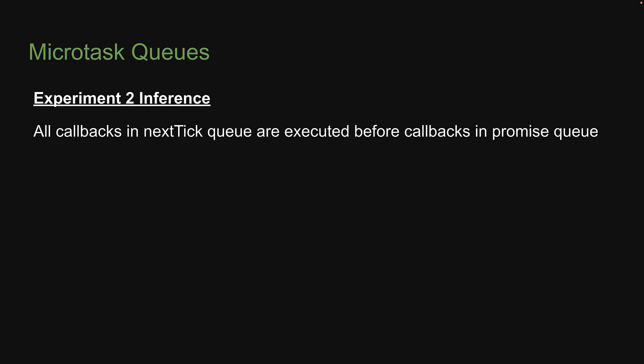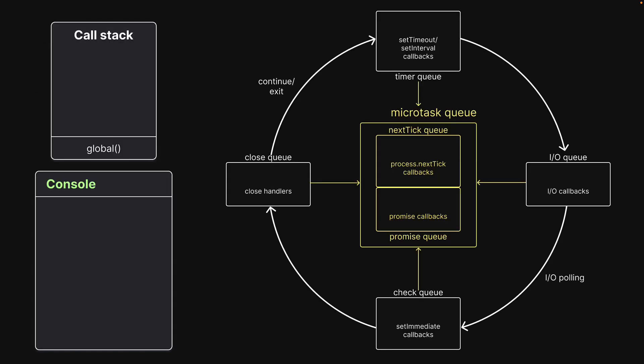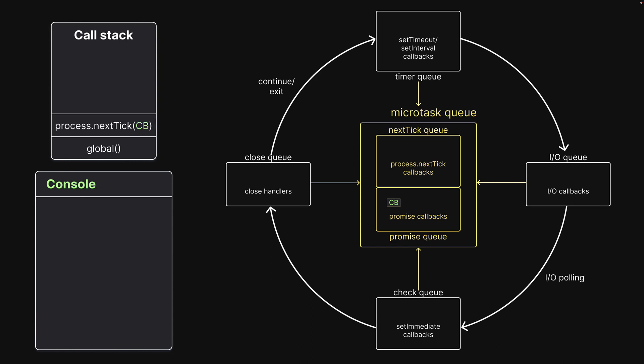And this is our inference for the second experiment: all callbacks in the nextTick queue are executed before callbacks in the promise queue. Let me help you visualize the execution. When the call stack executes line 1, it will queue the callback function in the promise queue.